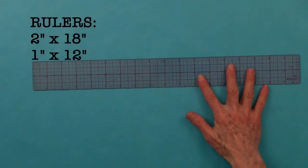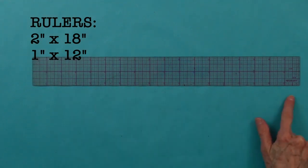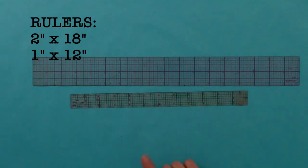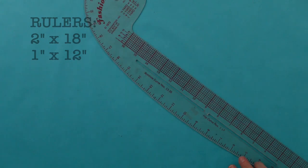This see-through ruler is indispensable. Both sides are exactly the same. Be sure you get the one with both sides the same. This is 2 by 18 inches and I use one that is 1 by 12 inches. This is good for seam allowance, a fashion ruler.